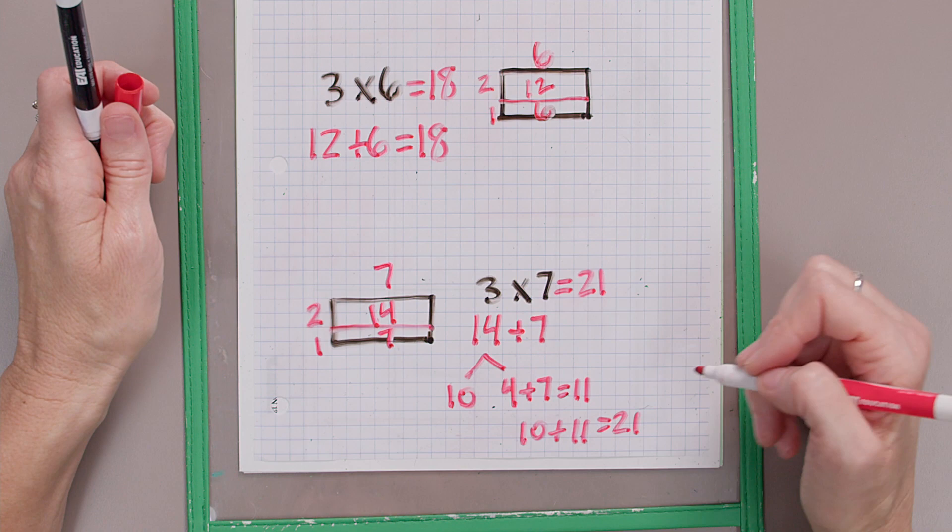Some good math going on there. Here's our strategy for threes: we can think of it as a two plus one, and we'll double and add one more set. Keep working on your graph paper, draw those area models, and I'll see you next time. Bye!